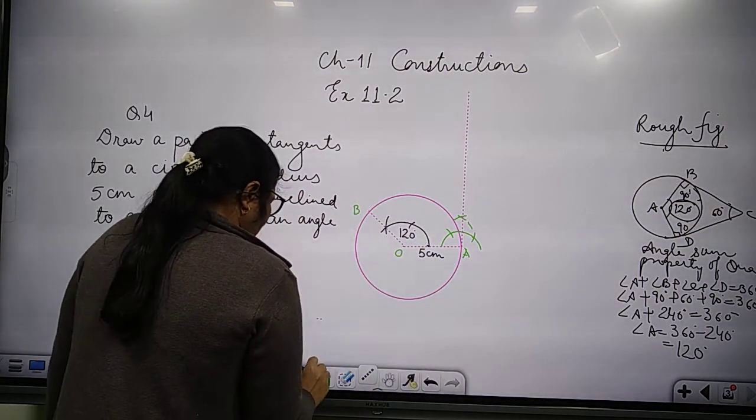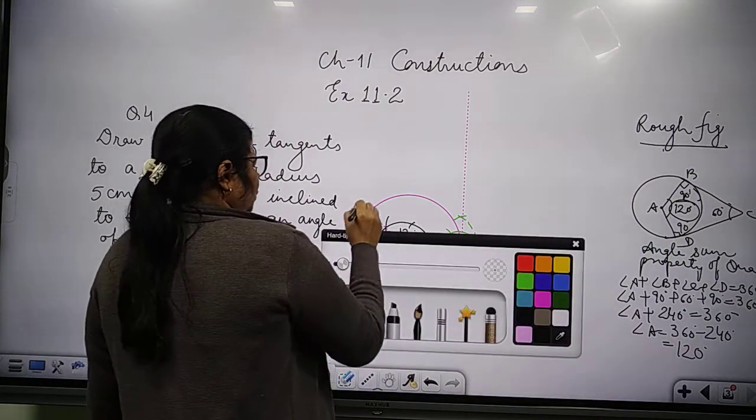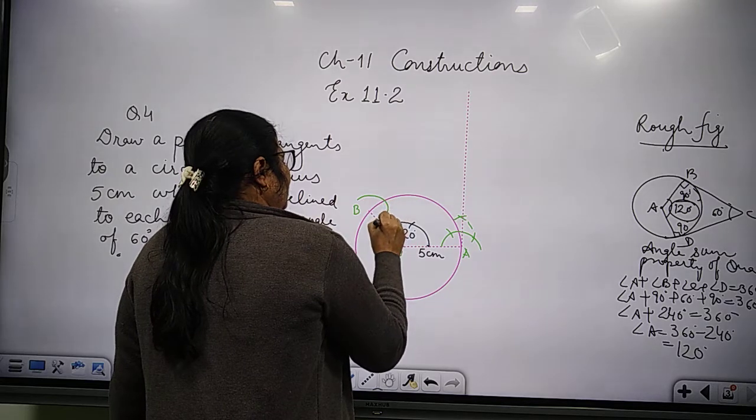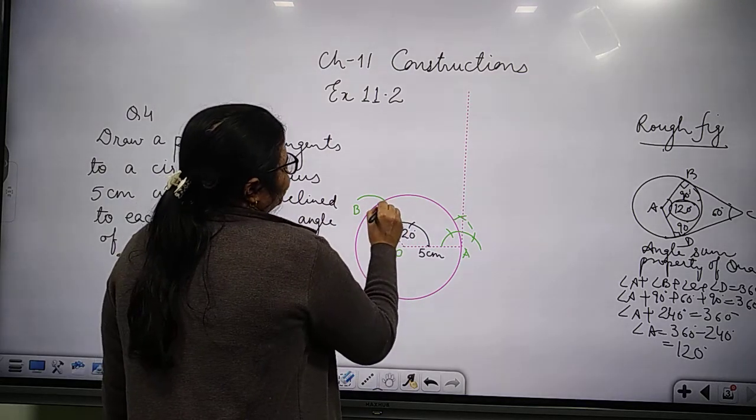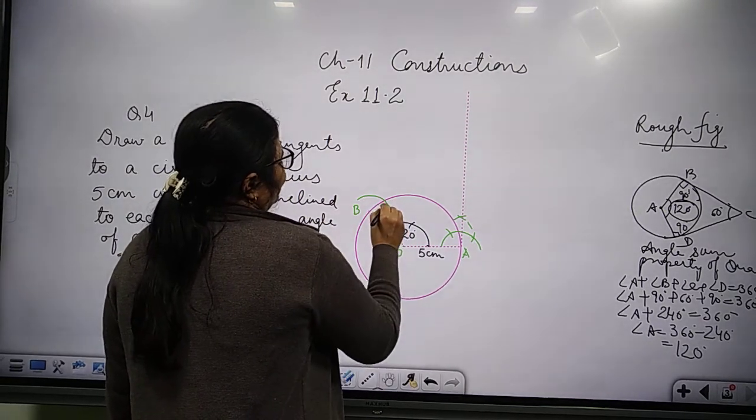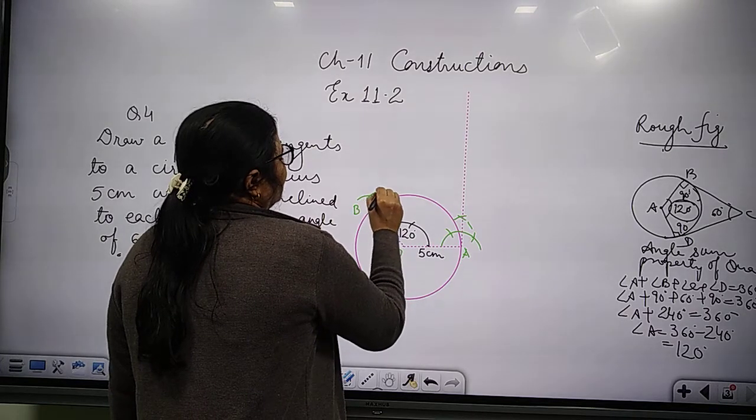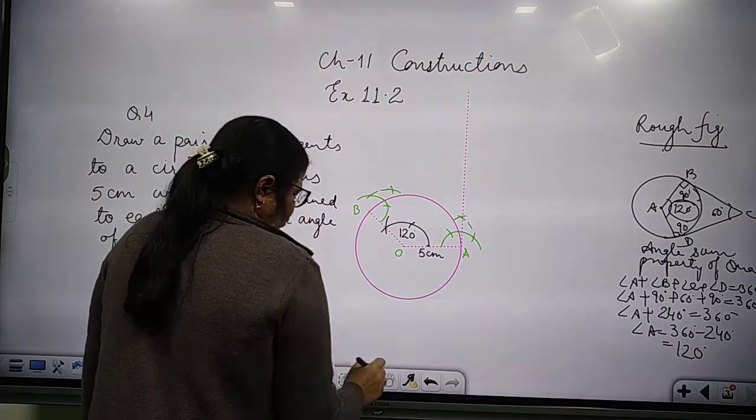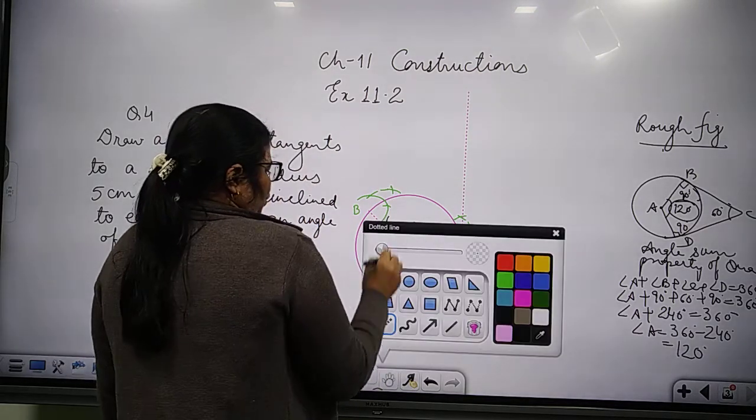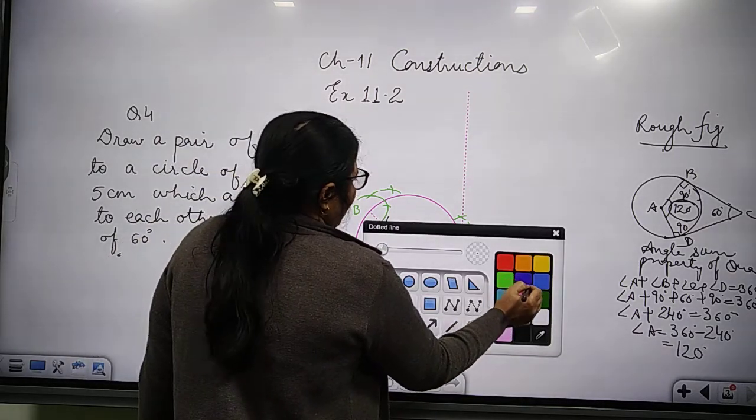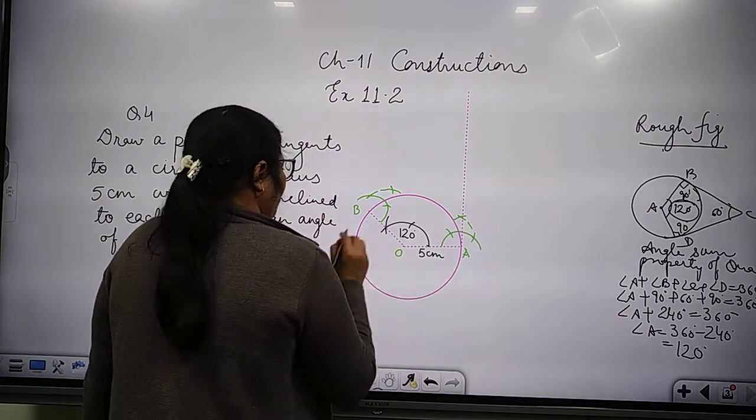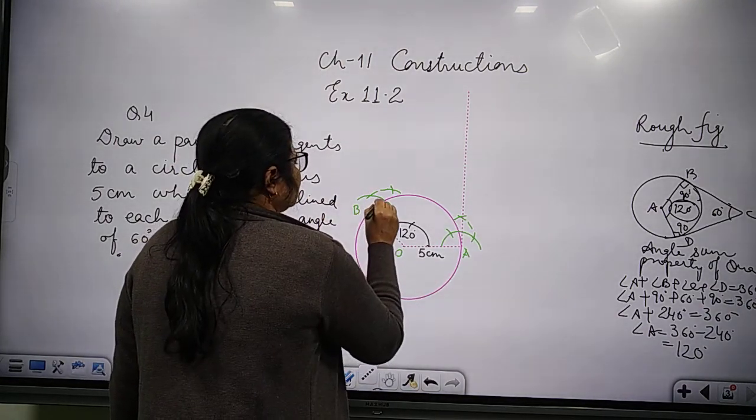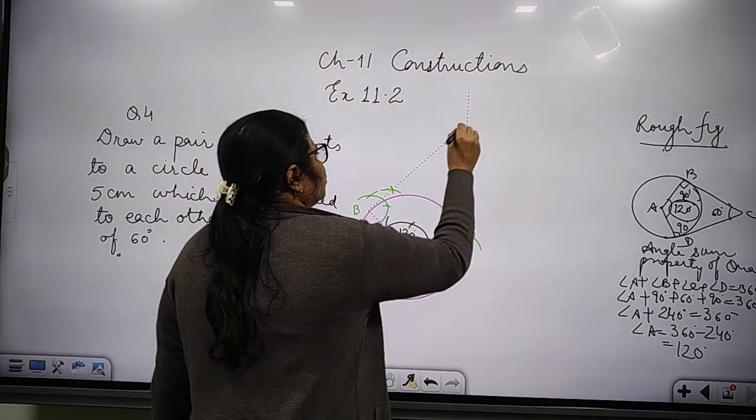Now here also, draw an angle of 90 degrees, first arc, then from here second arc, produce this arc. Now let's draw the 90-degree angle, first arc, then from here join it.